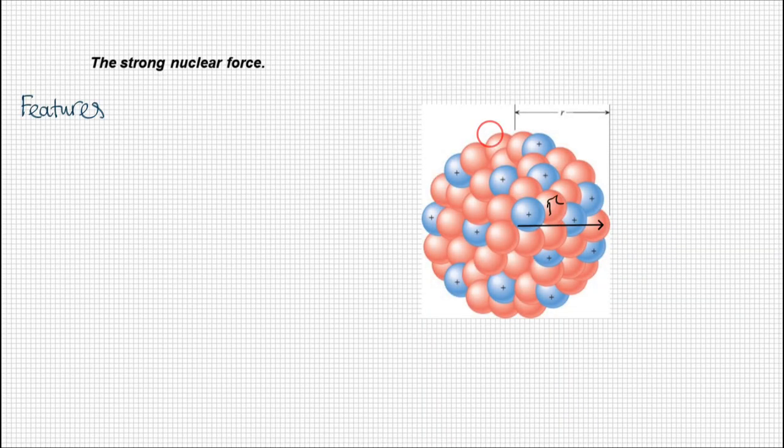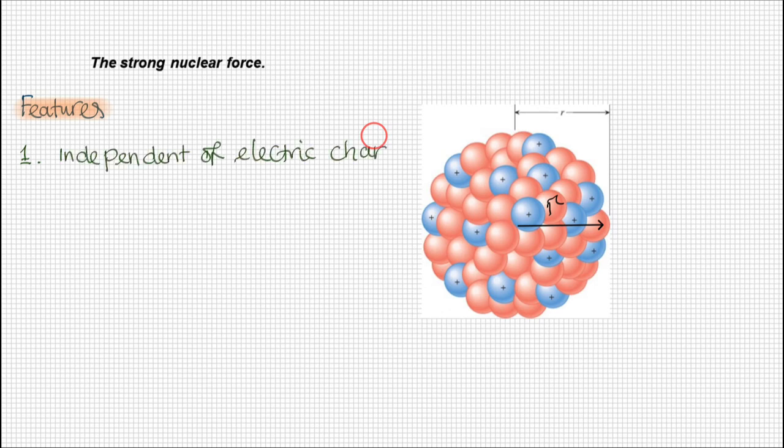Let's have a look at the features of the strong nuclear force. There are four things that we can identify from these conclusions. First of all, the strong nuclear force is independent of electric charge. What that means is that the force acting between a proton and a neutron or a proton and a proton or a neutron and a neutron are the same.